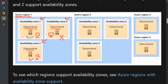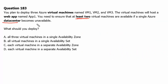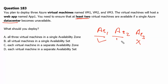Let's go back to the question. We need to make sure that at least two virtual machines are available if a single Azure data center becomes unavailable. Therefore we will have to place virtual machines in three availability zones so that if any availability zone's data center goes down, the other two virtual machines are up and running. Option A — all three virtual machines in a single availability zone — is incorrect, because if that availability zone goes down, all three virtual machines will go down.